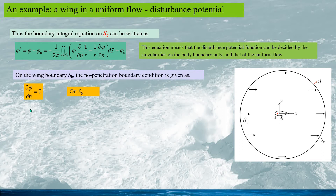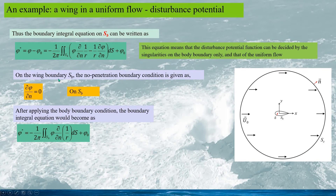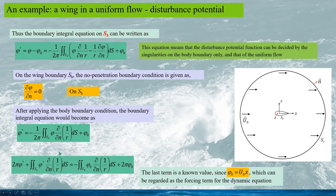In the case of the fixed wing in the uniform flow, as we have seen in many practical applications, the boundary conditions can be given as the non-penetration condition as this on the body surface. Applying this into the boundary integral equation, we could have the equation as this, and separate the potential function Phi into the disturbance potential and the uniform potential. Here the potential for the uniform flow is known, thus the right-hand side of the equation can be regarded as the forcing term for the dynamic system.